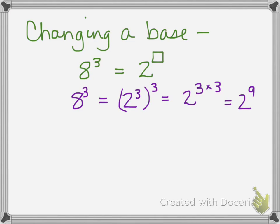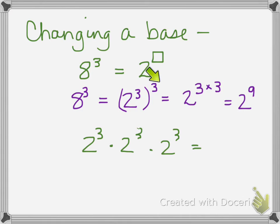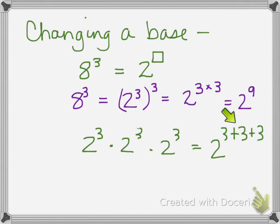If you forgot that rule — that taking a power to a power means you multiply the exponents — you could think of this as 2 to the third times 2 to the third times 2 to the third, because it's 2 to the third used as a factor 3 times. Then you can see this is 2 to the 3 plus 3 plus 3. You could even write each of these out as 2 times 2 times 2, nine times total. So it's 3 plus 3 plus 3, which is the same as 3 times 3, giving 2 to the ninth.